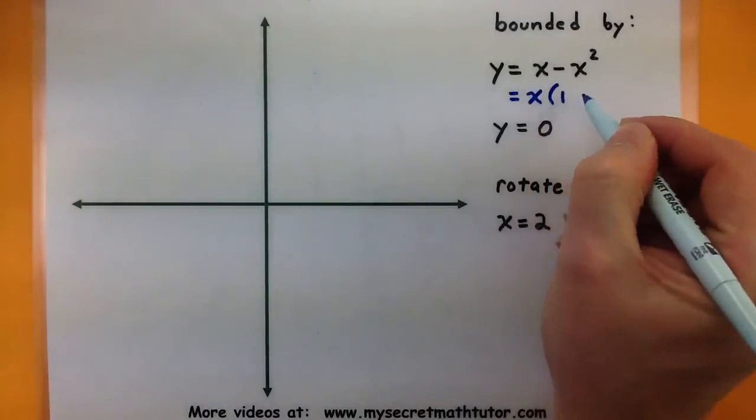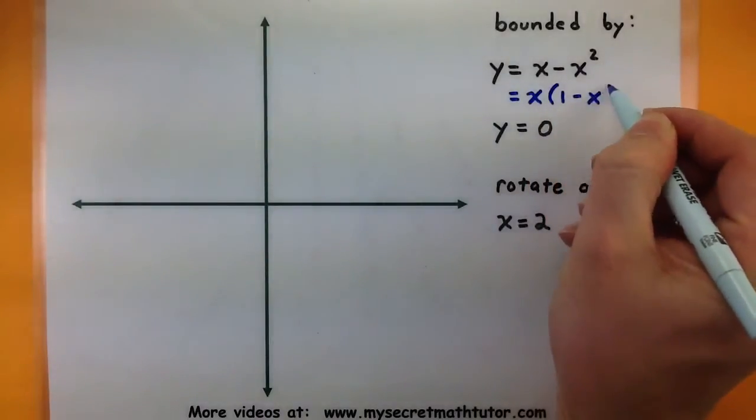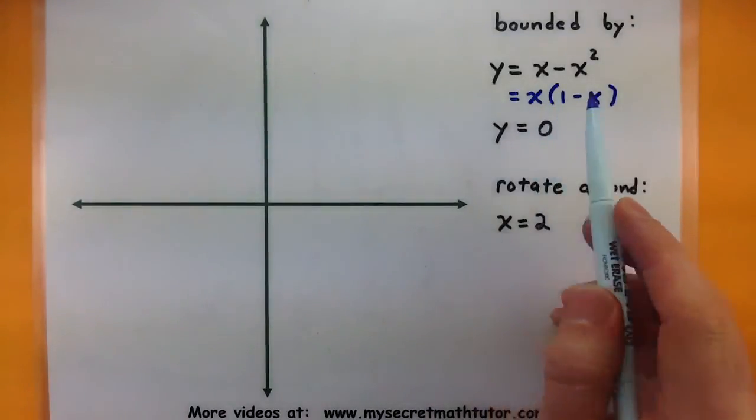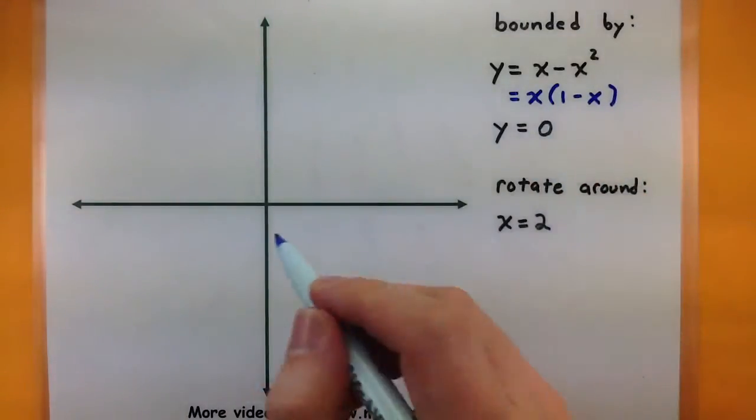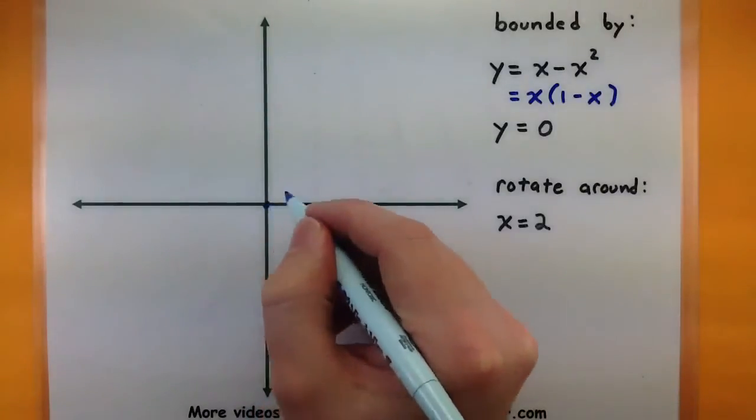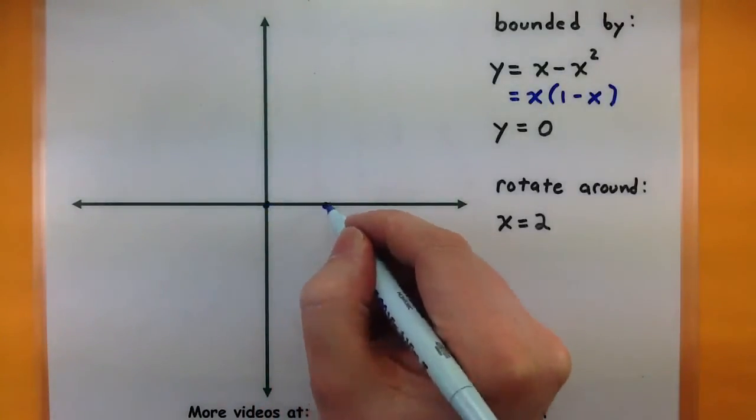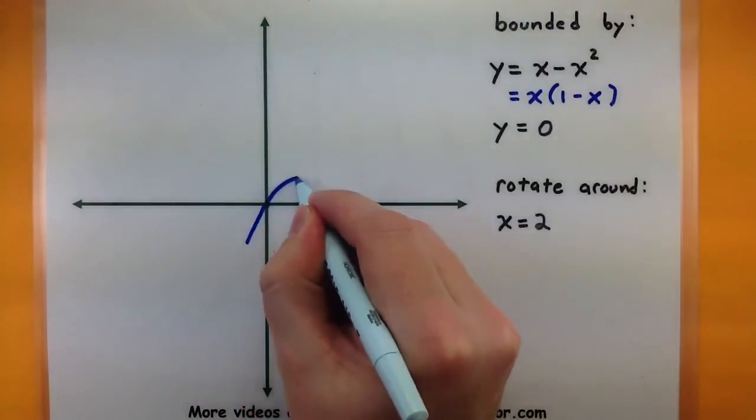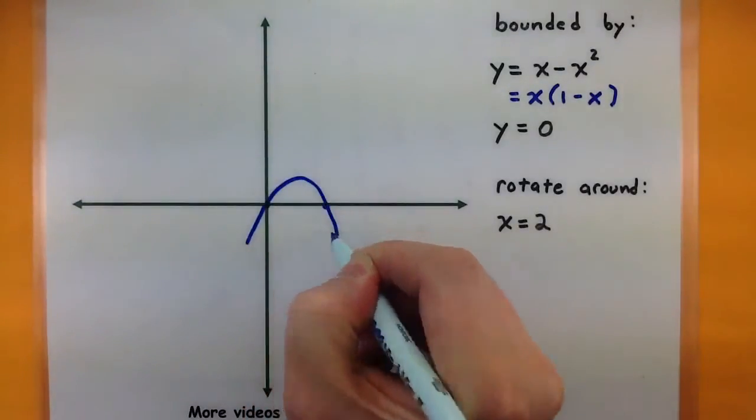If I factor out an x from both of the terms, then I'll know exactly where it crosses the x-axis. So it looks like it crosses when x equals 0, and again when x equals 1. So I'll put a spot there, and a spot there for x equals 0 and 1. So a little segment of our parabola, something like that.